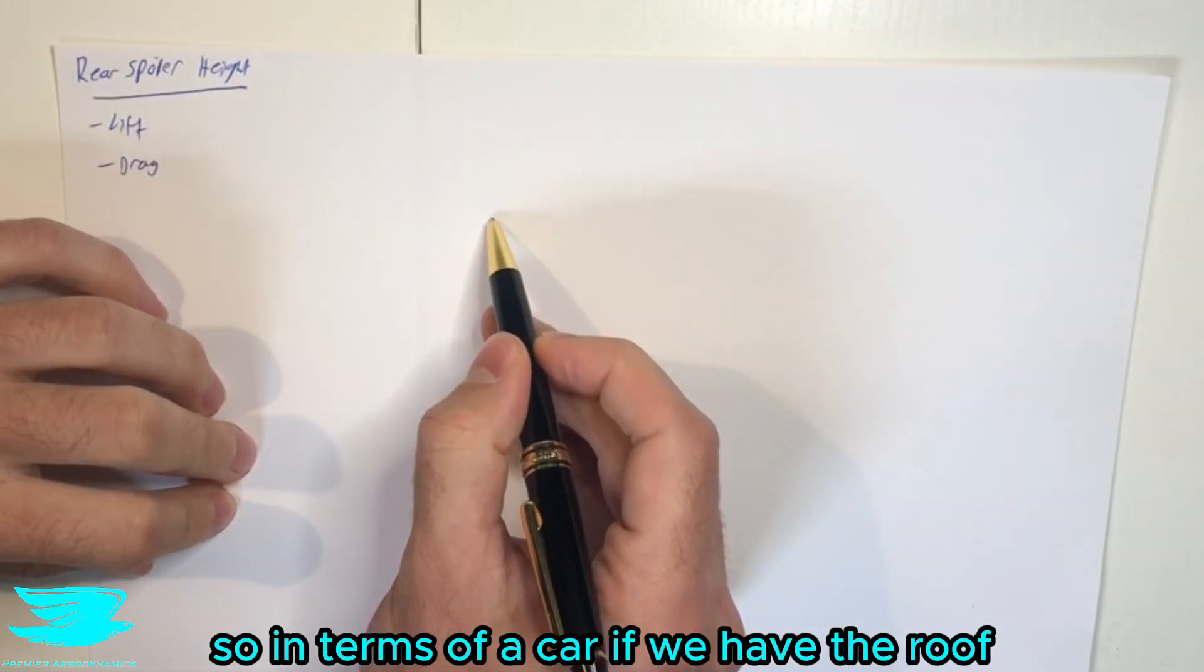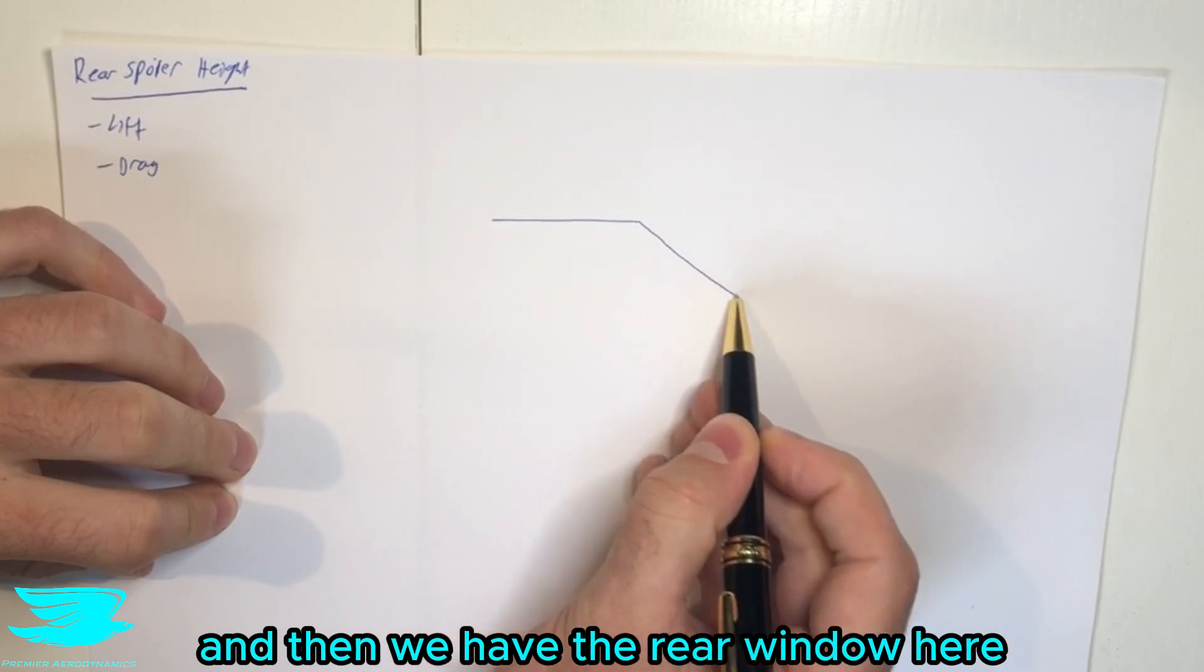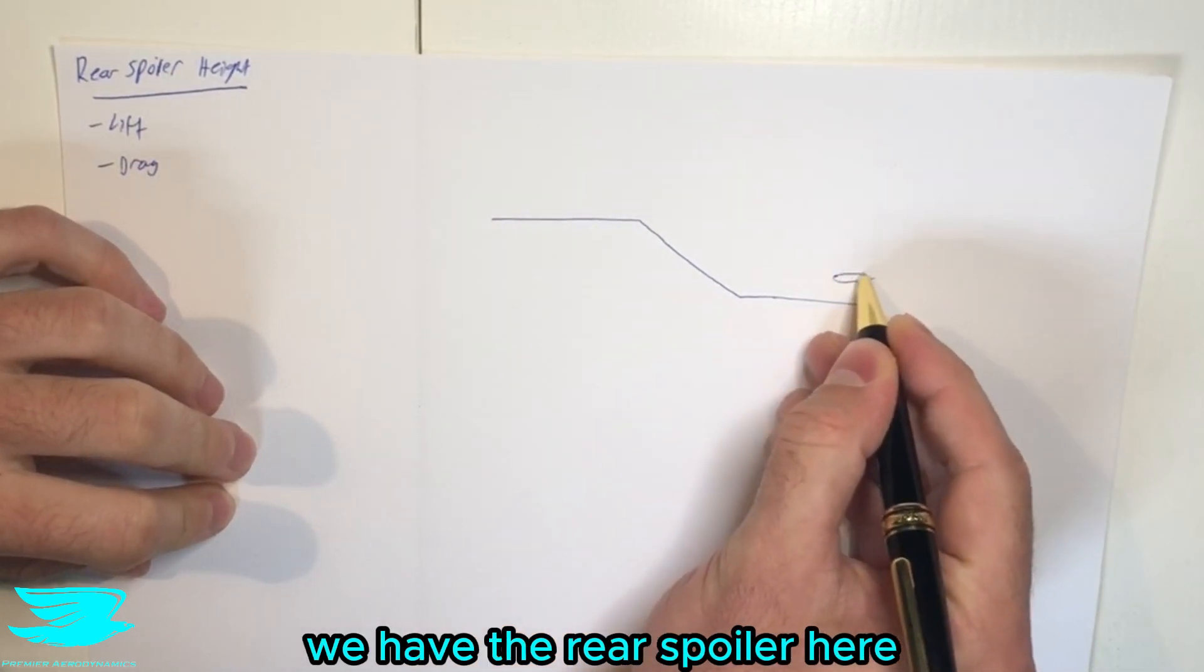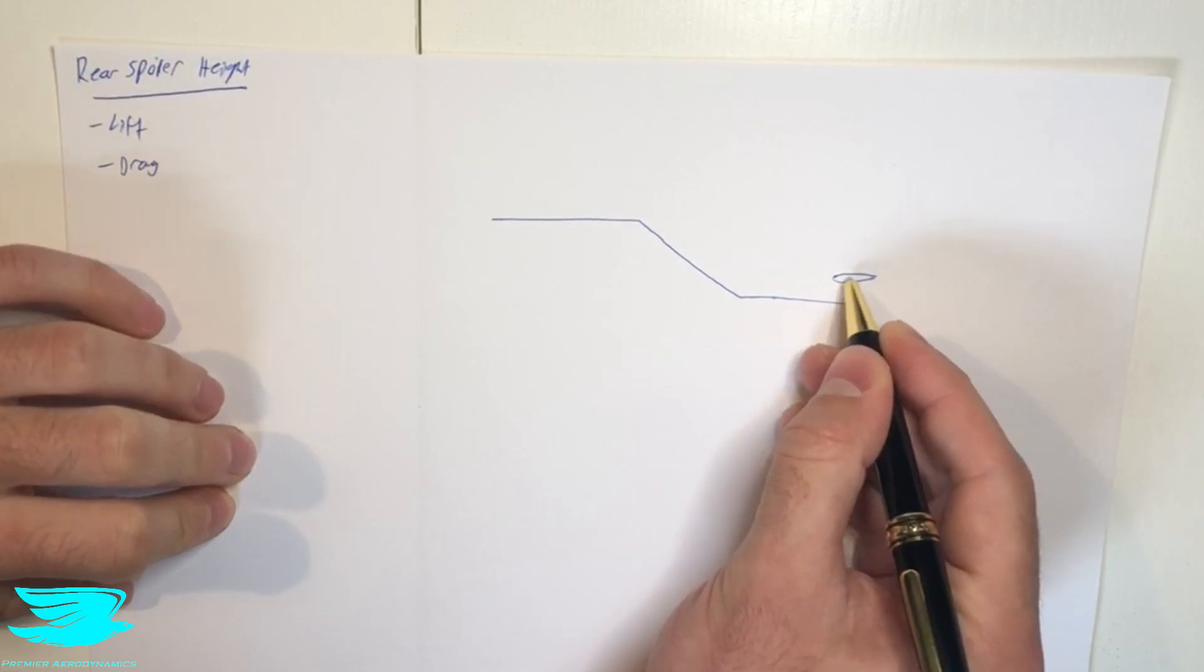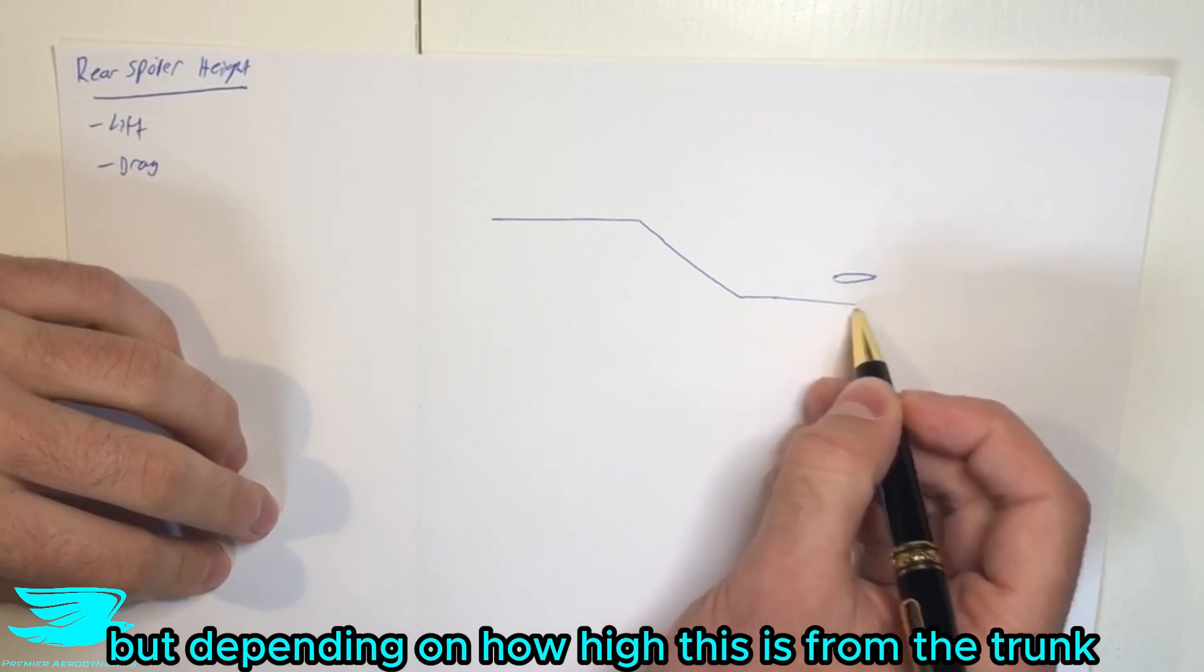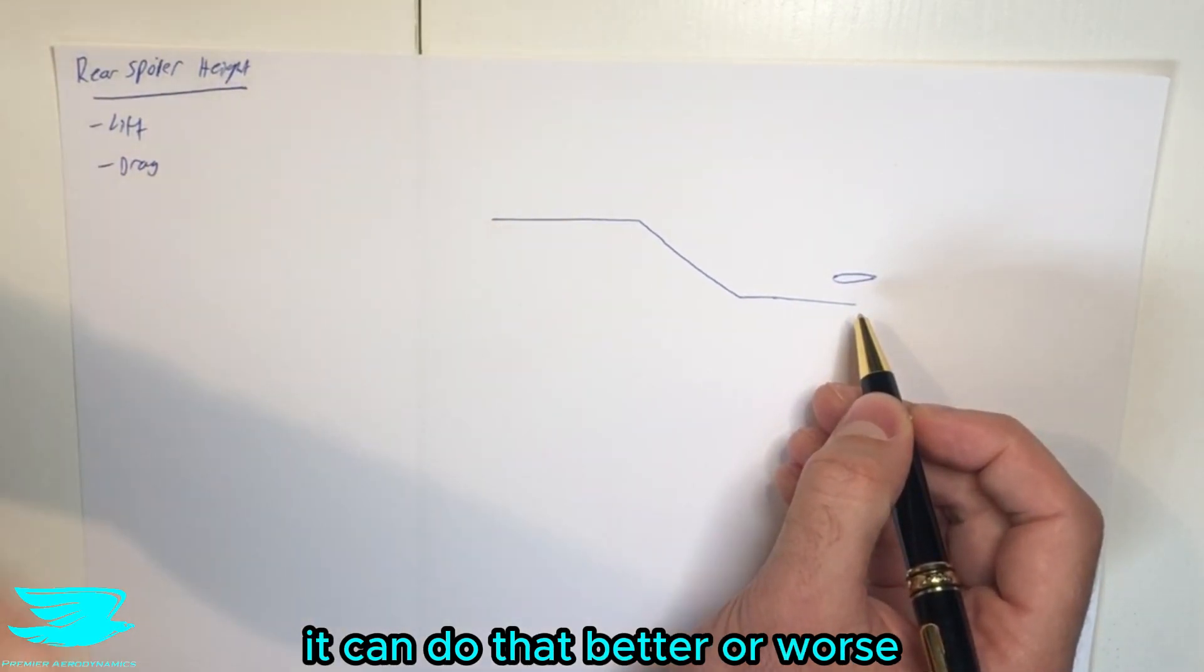So in terms of a car, if we have the roof and then we have the rear window here and then we have the boot or the trunk, we have a rear spoiler here. And ideally the rear spoiler is there to increase downforce, but depending on how high this is from the trunk it can do that better or worse.